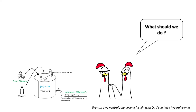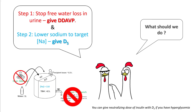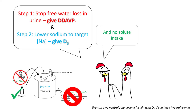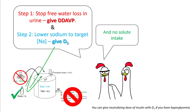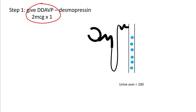What should you do in these cases? If you remember this diagram, the two things you can do are: stop free water loss in the urine, and lower the sodium to get to your target. For that, you give DDAVP to stop free water loss, and to lower sodium you give D5W. Of course, you also stop solute intake. You can give two micrograms of DDAVP times one dose.